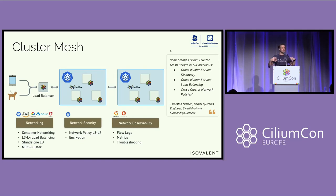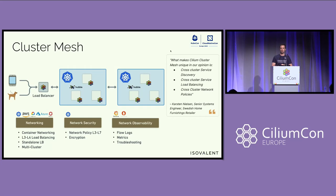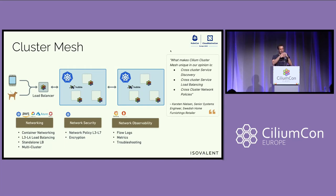Cluster mesh: we added the ability to connect multiple Kubernetes clusters together, first discussed back in 2018 at KubeCon. It was a little early then, but today it's a major feature many Cilium users rely on. It lets clusters stay separate and independent while Cilium creates a data plane below, allowing pods to talk to each other across clusters — with services, network policy, encryption, Hubble, and so on.